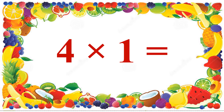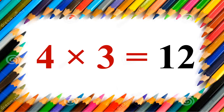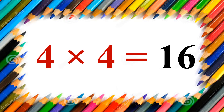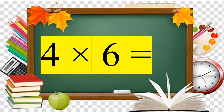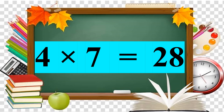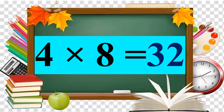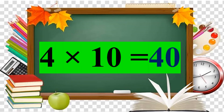Table of 4. We are going to read the 4 table. 4 ones are 4. 4 twos are 8. 4 threes are 12. 4 fours are 16. 4 fives are 20. 4 sixes are 24. 4 sevens are 28. 4 eights are 32. 4 nines are 36. 4 tens are 40. Are you clear with the 4 table now?